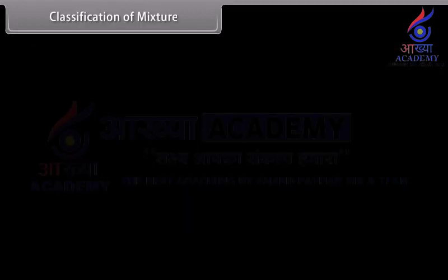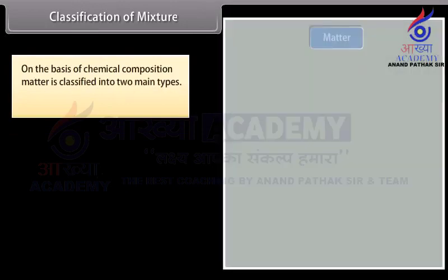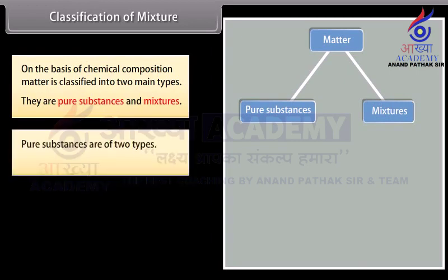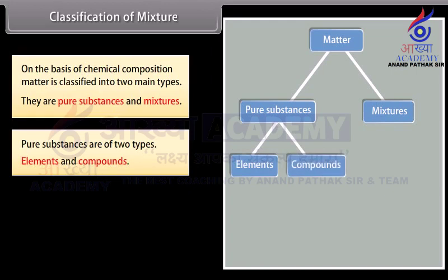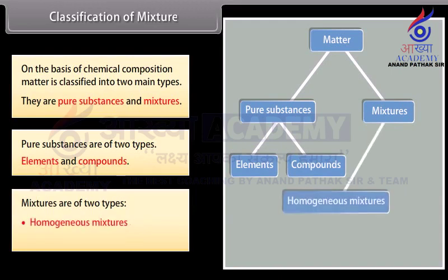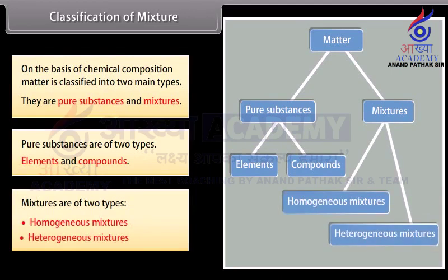Classification of Mixture. On the basis of chemical composition, matter is classified into two main types: pure substances and mixtures. Pure substances are of two types — elements and compounds. Mixtures are of two types — homogeneous mixtures and heterogeneous mixtures.